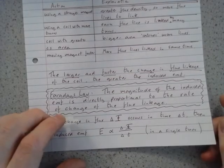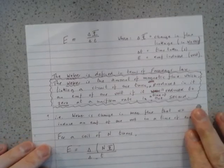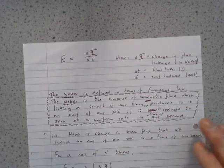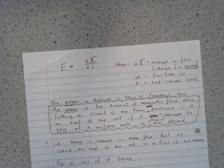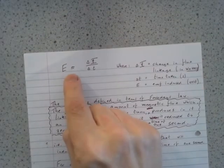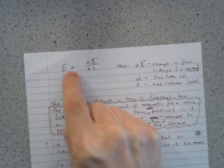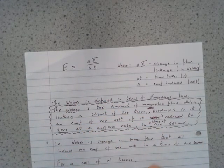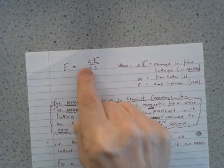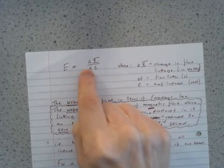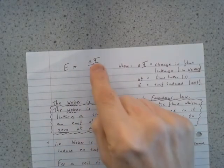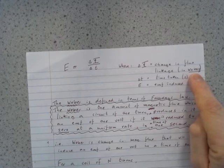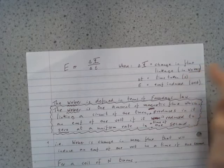That would be the flux change in a single turn. Magically, we can change that proportionality into an equation by just simply placing an equal sign here. Notice that there's no constant of proportionality, no other term. So how did that happen? Well, how it happens is because we actually use this equation to define the unit of flux linkage, which as you hopefully remember from last week is the Weber. So the EMF will be in volts if the flux linkage or change in flux linkage is in Webers and the time is in seconds.